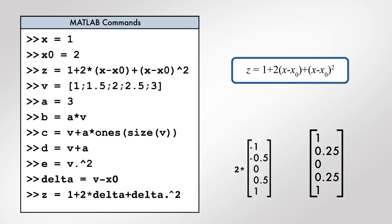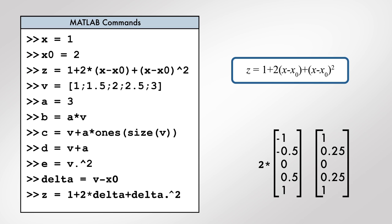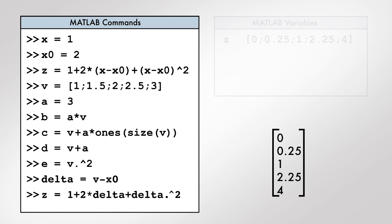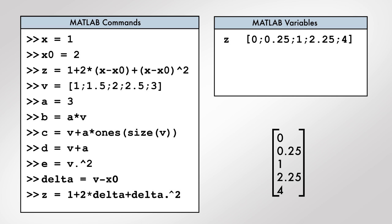The middle term uses scalar multiplication and doubles each element of delta. Finally, the scalar value 1 is automatically expanded into a vector of 1's to match the size of the result from the other two expressions, and the three vectors are added together and stored in a new variable z.